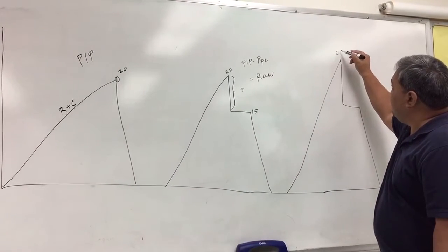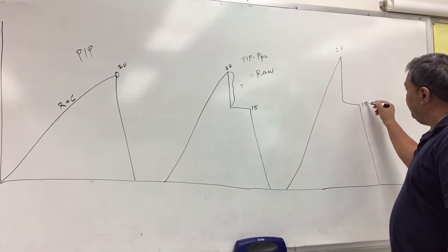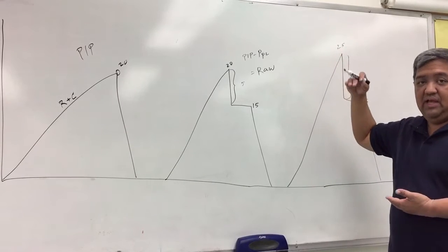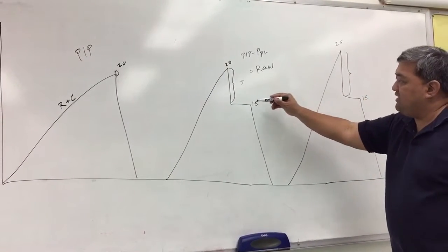inspiratory pressure went up to, let's say, 25, but the plateau remained the same at 15, you can see that the difference is increasing as the PIP and the plateau widens. Assuming that the plateau